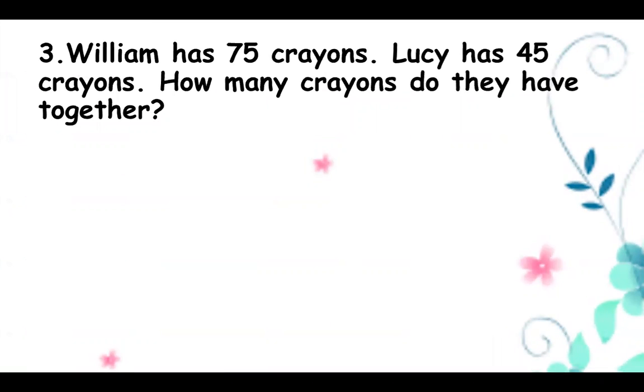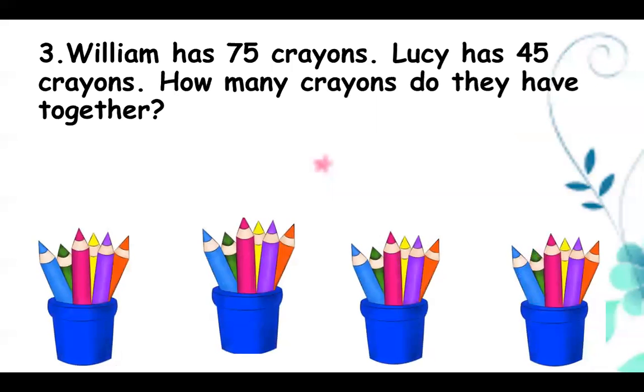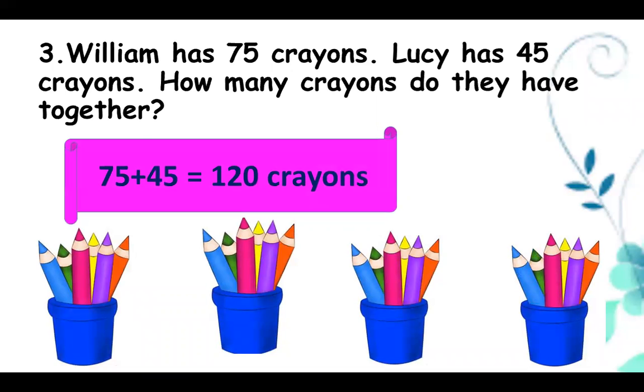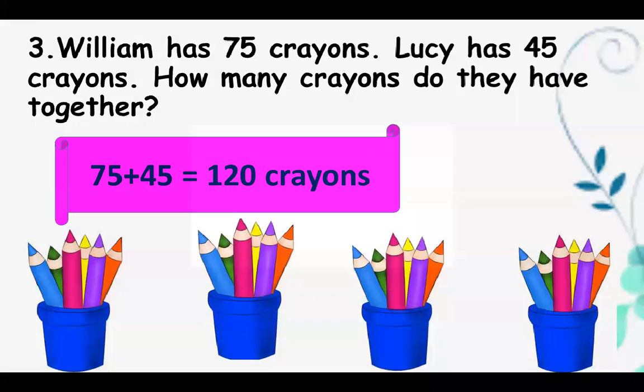William has 75 crayons. Lucy has 45 crayons. How many crayons do they have together? So you need to find the sum of 75 plus 45. That equals 120 crayons. So all together they both have 120 crayons.